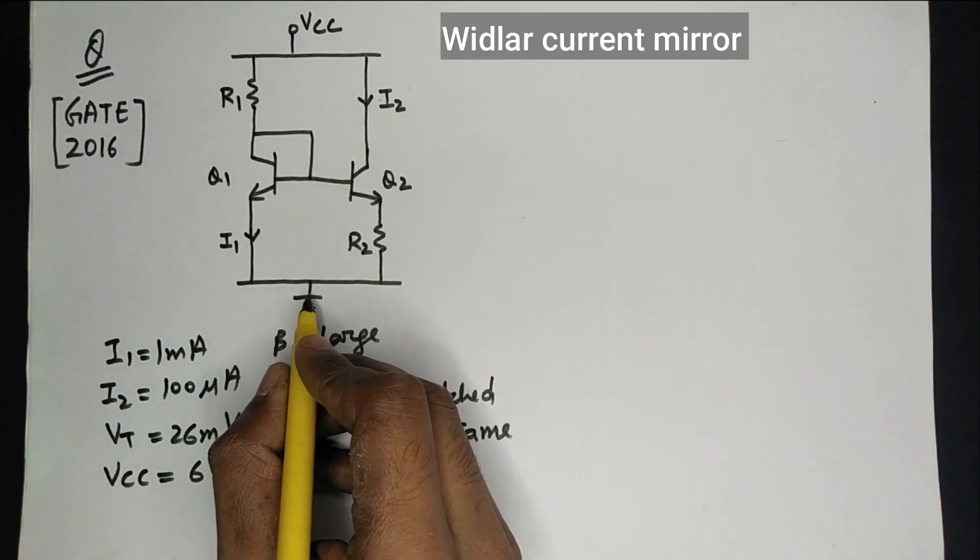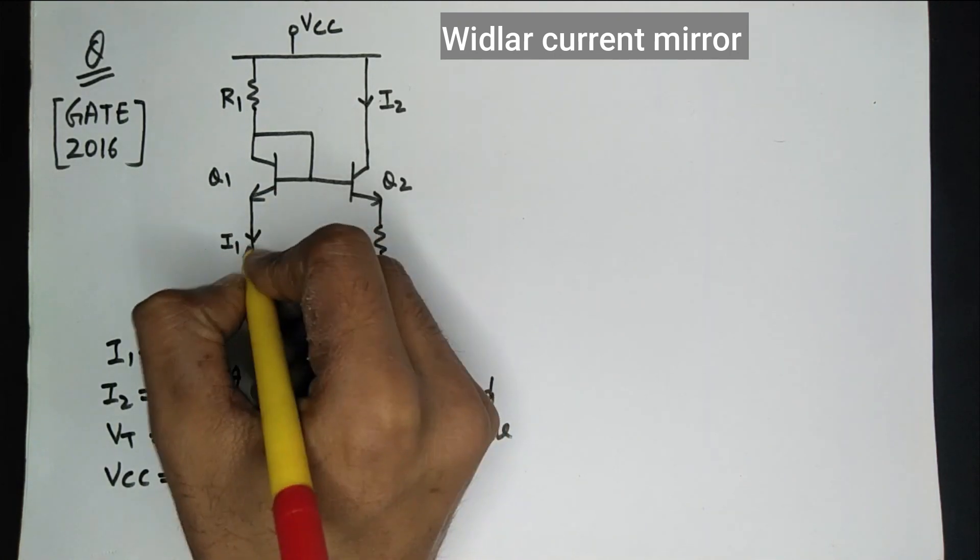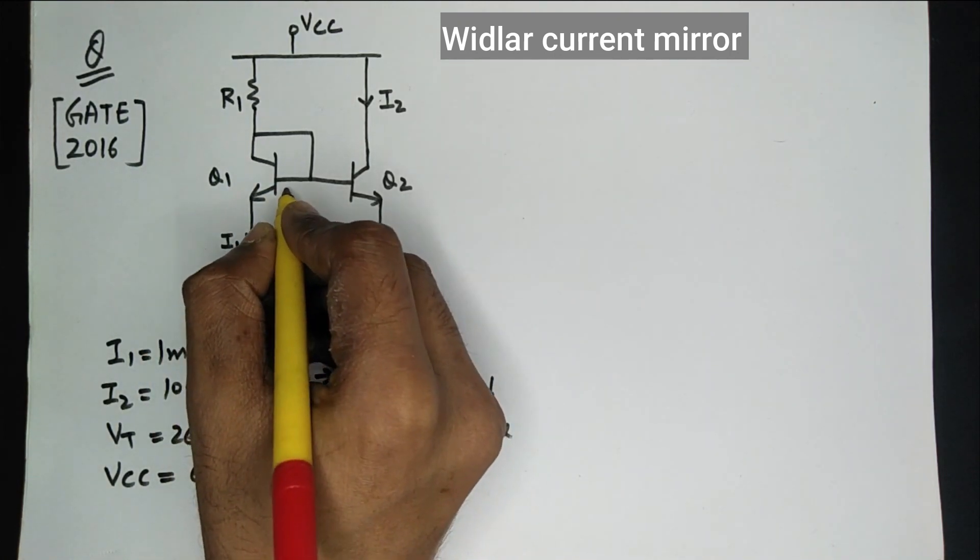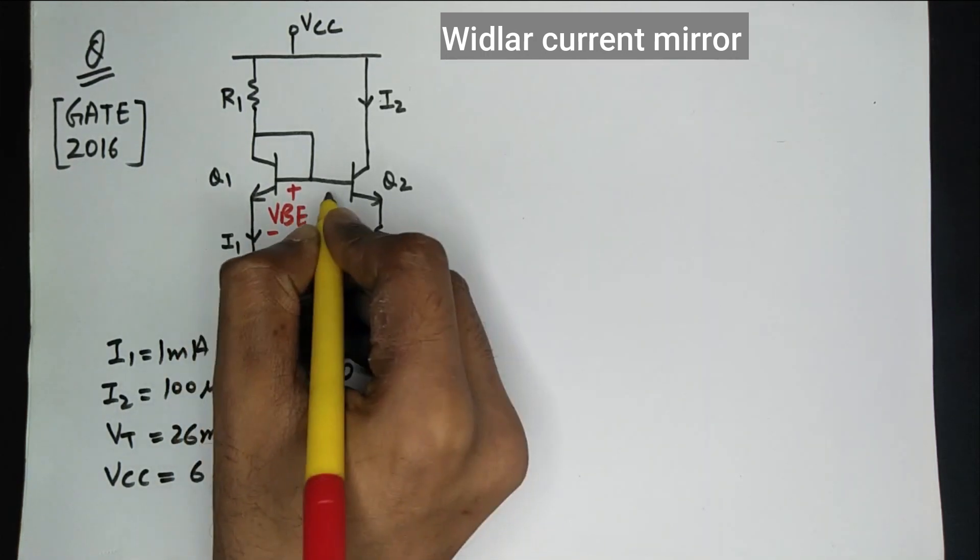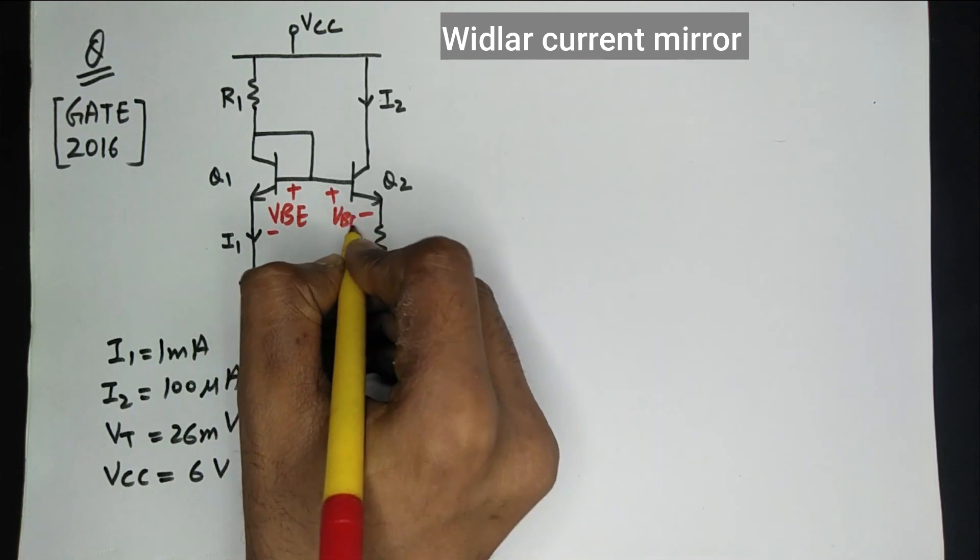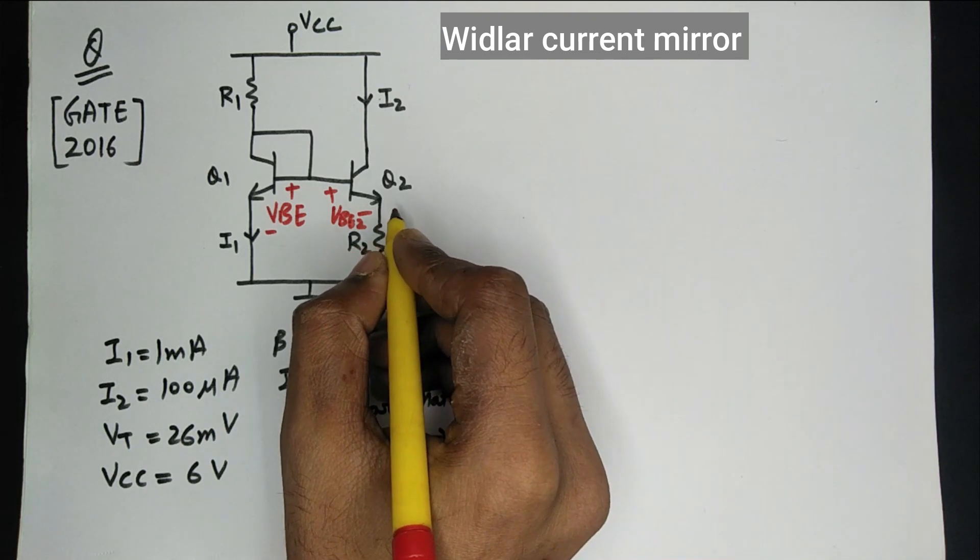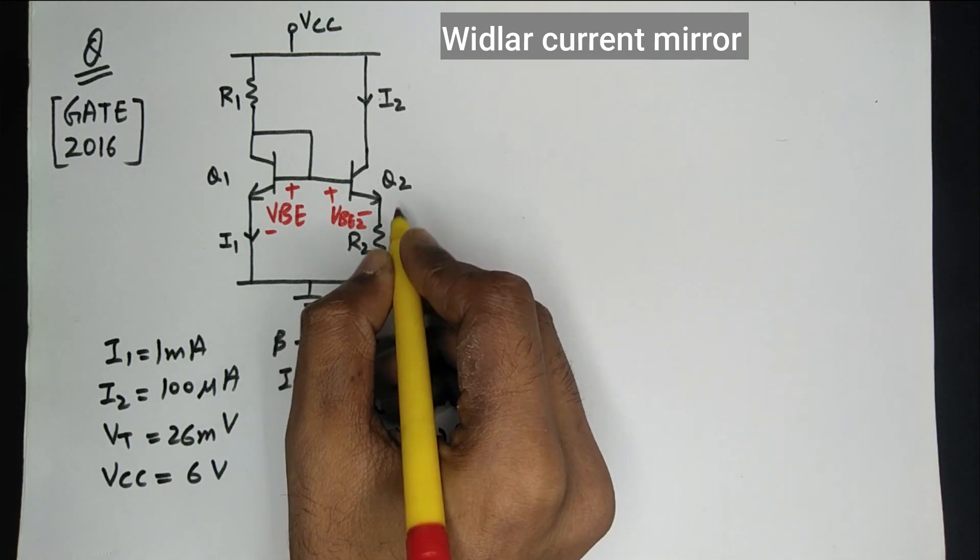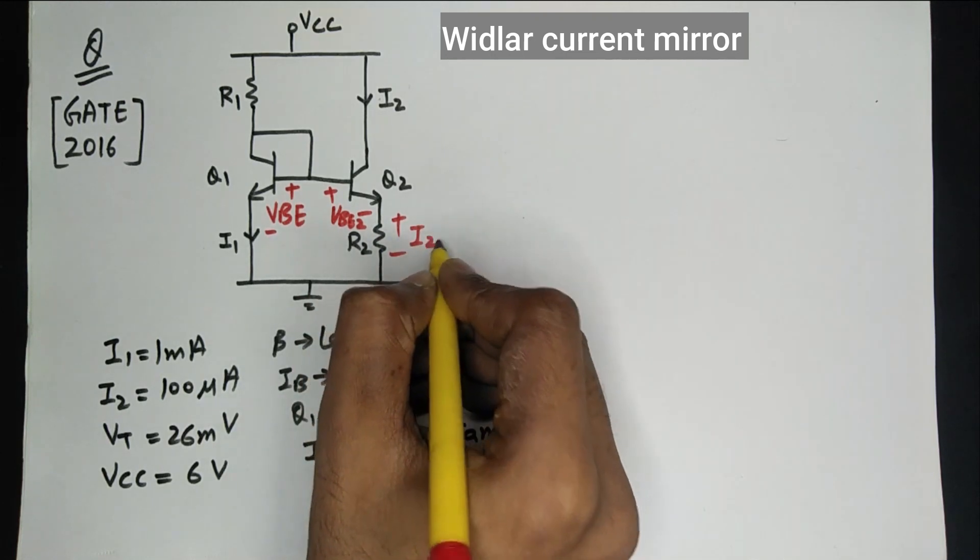This is the circuit we have. The collector current of Q1 is I1. Then there will be some base-emitter voltage drop, let's assume that to be VBE1, and similarly for Q2, I2. And there will be some voltage drop across R2 as the current I2 is flowing through R2, that will be I2*R2.